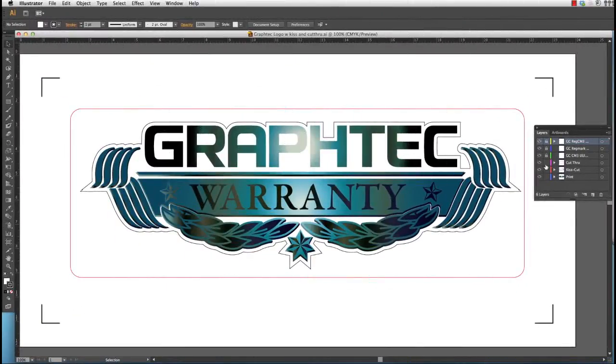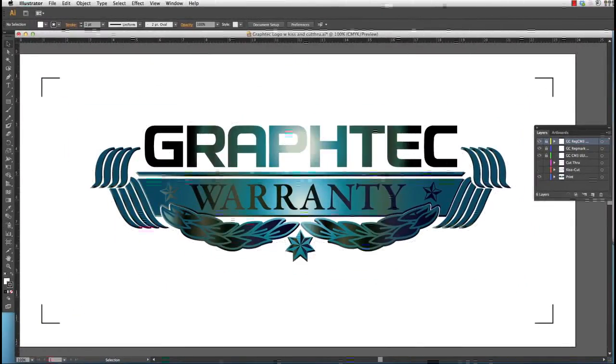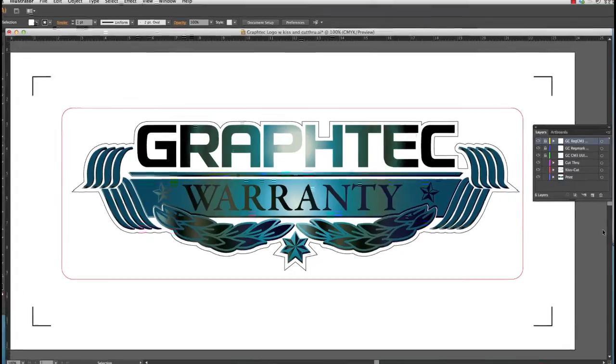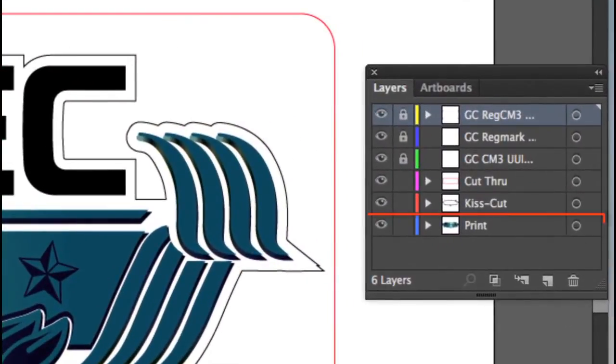In this demonstration we'll use this graphic you see here on the screen. You'll notice two outside cut lines in different colors each being assigned to a different layer. There are three layers that are labeled print, kiss cut, and cut through. The print layer has all the objects that are to be printed, kiss cut is the normal cut, and cut through is the layer that contains the cut line that will cut through the backing. We'll assign the appropriate conditions to both cut layers.